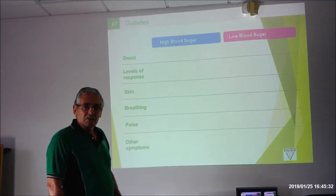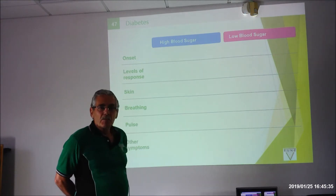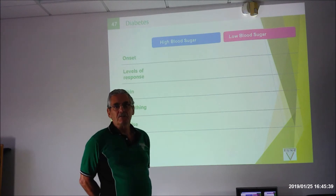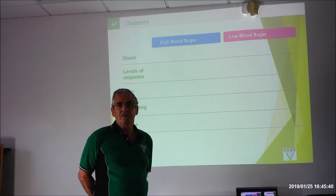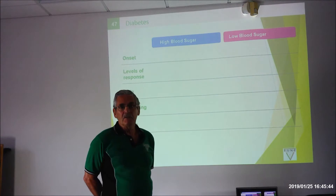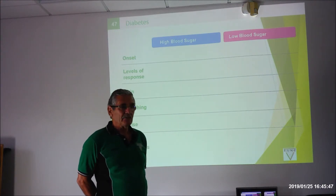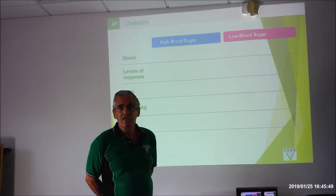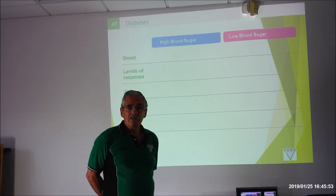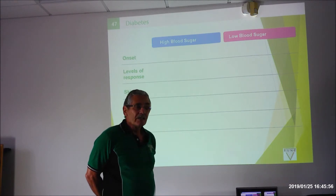The next topic we're going to discuss is diabetes. The problem with diabetes is the pancreas does not produce enough of the hormone insulin. If the body is not producing insulin, the brain cannot use sugar properly, so instead of using sugar it uses fat from the body.